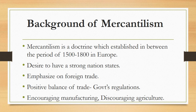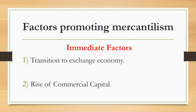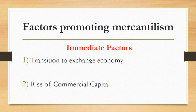We will now study the factors which gave birth to mercantilism. There were two types of factors: immediate factors and indirect factors. The first immediate factor is the transition to an exchange economy. Prior to this period, there was the concept of a local economy — countries depended upon what they produced themselves. But with the beginning of the 16th century, an economic shift took place: countries moved from a local economy to an exchange economy, meaning countries started sharing their products with each other, and trade was promoted in the world as production increased.